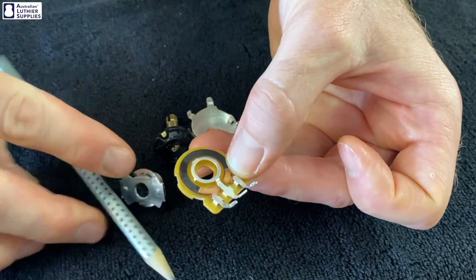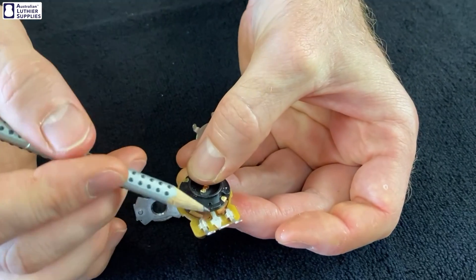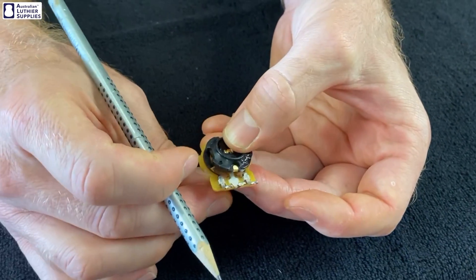So basically, depending on the position of the knob, the amount of signal that can get from the middle lug to each of the outer lugs is changed depending on that position. I hope that helps you decipher how pots work.